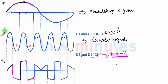Because it's a negative cycle of the carrier, here VO will be minus VI. Now because VI is negative, you can see VO is a positive signal.